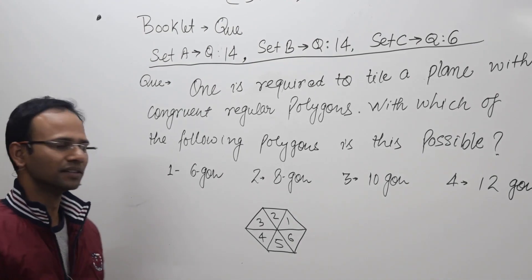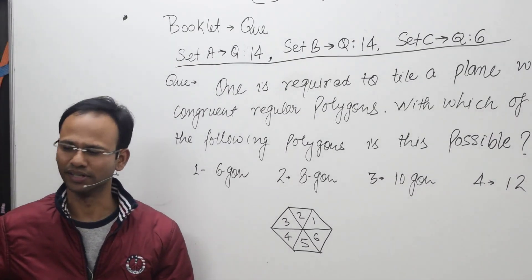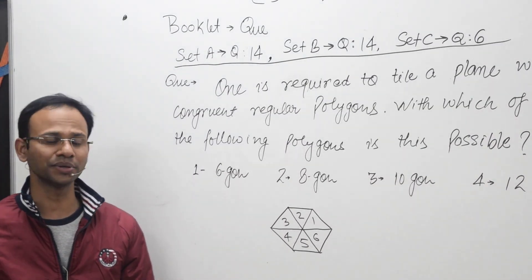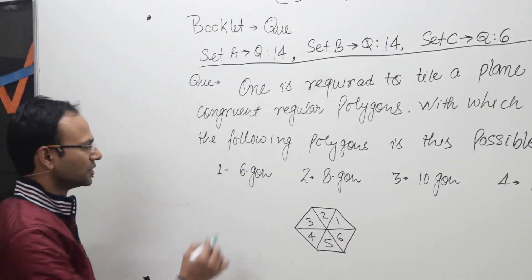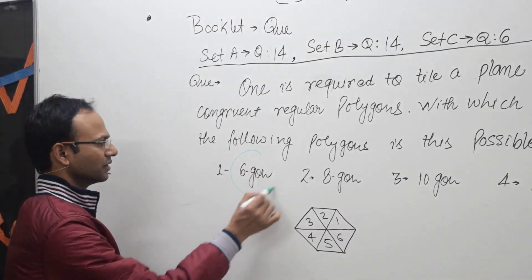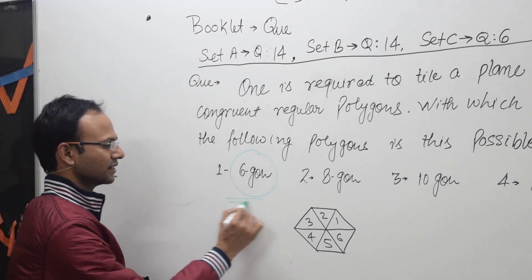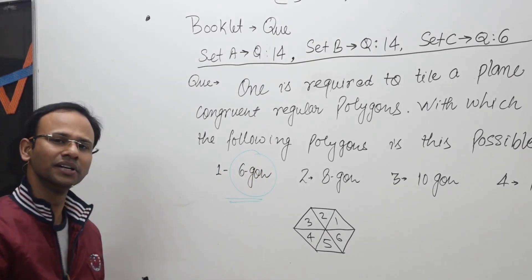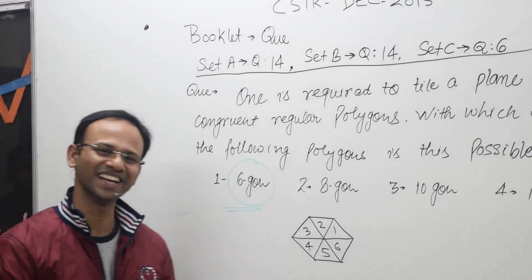So this is the answer. The correct choice will be choice 1 — it is the regular hexagon. Thank you.